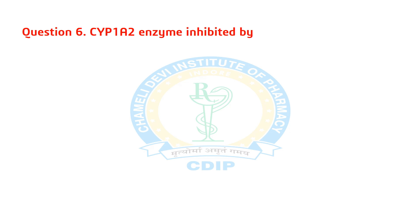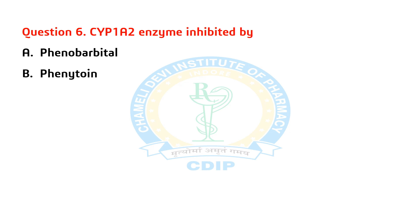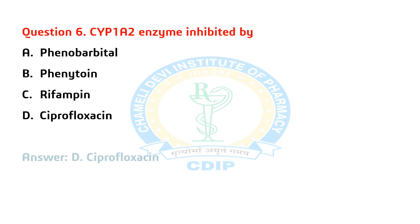Question 6. CYP1A2 enzyme is inhibited by? A) Phenobarbital. B) Phenytoin. C) Phenobarbital. D) Ciprofloxacin. Answer: D. Ciprofloxacin.